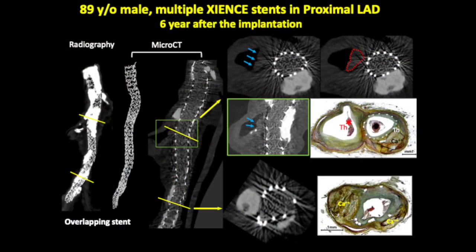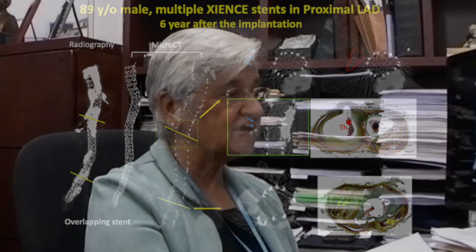By microCT, an 89-year-old male with multiple stents in the proximal left anterior descending six years after implantation. This shows the area of the bifurcation — you can see the stent and the calcium. The microCT longitudinal cut clearly shows the calcium, and at the bifurcation site you can see the stent cross-section. Thrombus is visible on the luminal side, confirmed by corresponding histology.